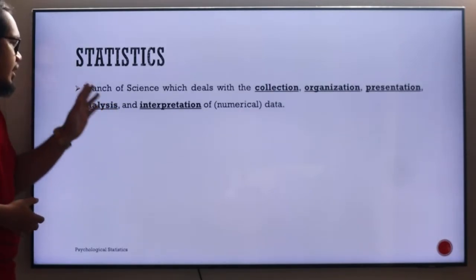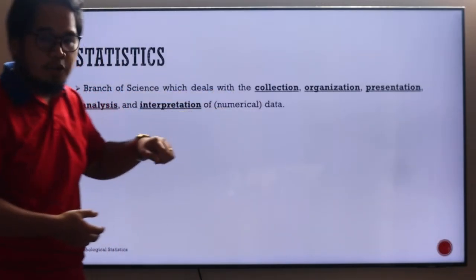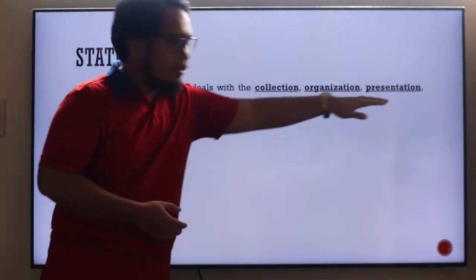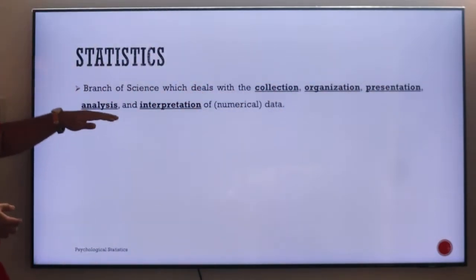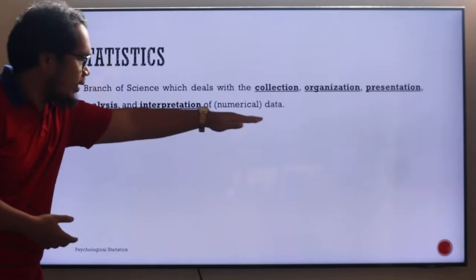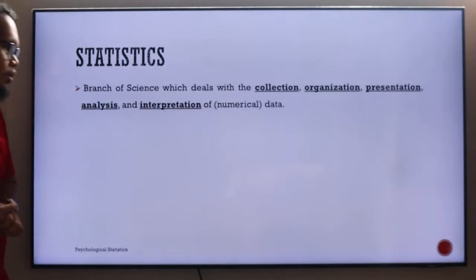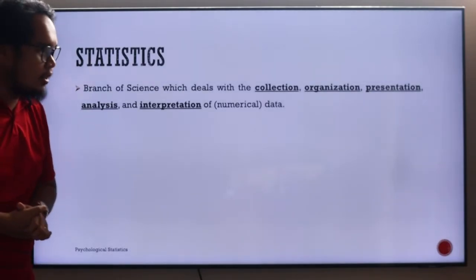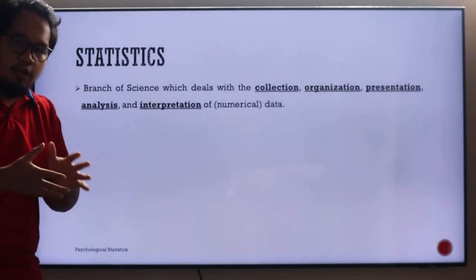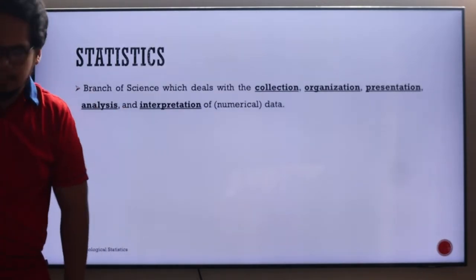So let's try to look at that definition. We will say that statistics is the branch of science which deals with the first collection, organization, presentation, analysis, and interpretation of data. So when we say data, we want to make it clear that it should be numerical data. So we're going to talk about the types of data later on. That is, we have two, categorical and numerical.